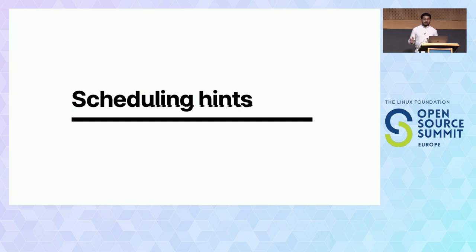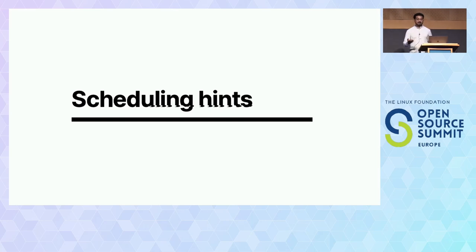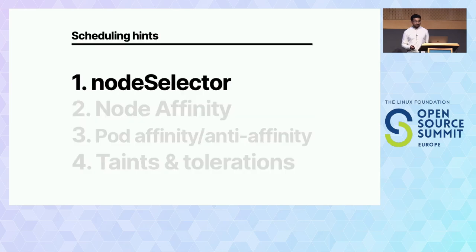The scheduler is optimized to make the best placements — to spread things out and make sure if one node goes missing, things don't go south. So the scheduler is trying to do the smart thing: deploy pods across all nodes, spread them out. Now, sometimes you probably know your application better than the Kubernetes scheduler does, so you might want to influence the scheduler. How can we do that? We have four tools: node selector, node affinity, pod anti-affinity and affinity, and taints and tolerations.